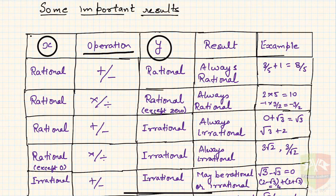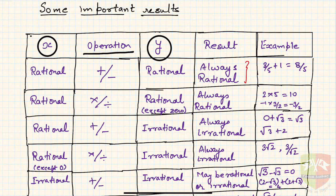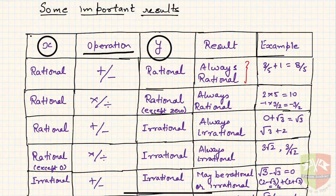So let us try and understand what exactly this means. If you take a rational number x and add or subtract another rational number, the result is always going to be a rational number. For example, 3/5 + 1 is 8/5. So anytime you add or subtract a rational from another rational number, you will always get a rational number.